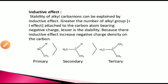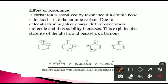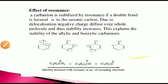The next stabilizing effect is resonance. A carbanion is stabilized by resonance when a double bond is located alpha to the anionic carbon. Due to delocalization, the negative charge diffuses over the whole molecule, and stability increases. This explains the stability of allylic and benzylic carbanions. For example, the CH2 minus group has its negative charge shifted into the ring, delocalizing throughout the whole molecule.